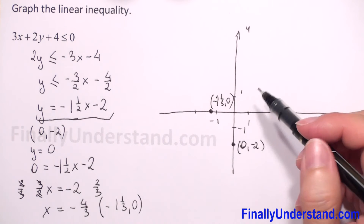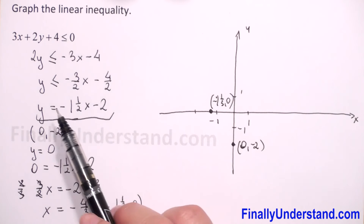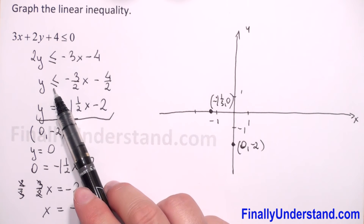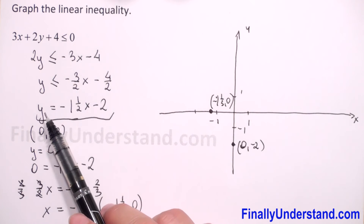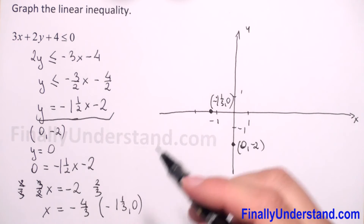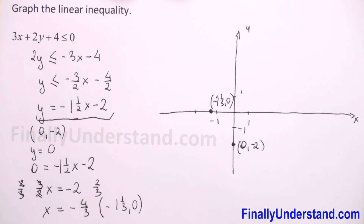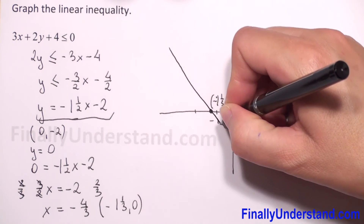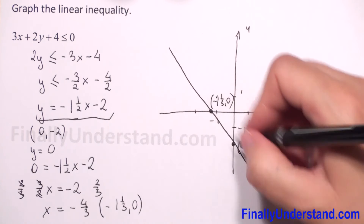Our function is going down, and like we said, because we have the symbol of inequality y less than or equals, it means that this line belongs to our solution. So we will draw a straight line passing through these two points.